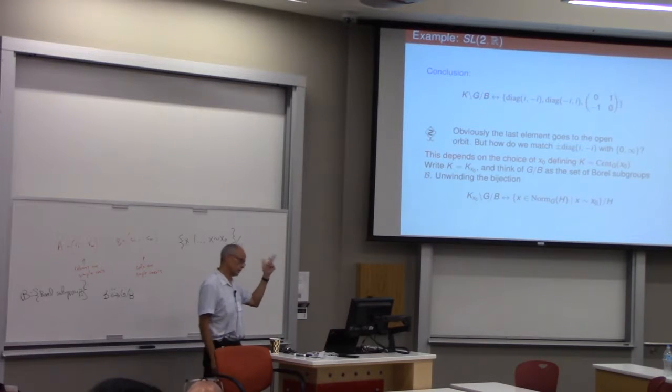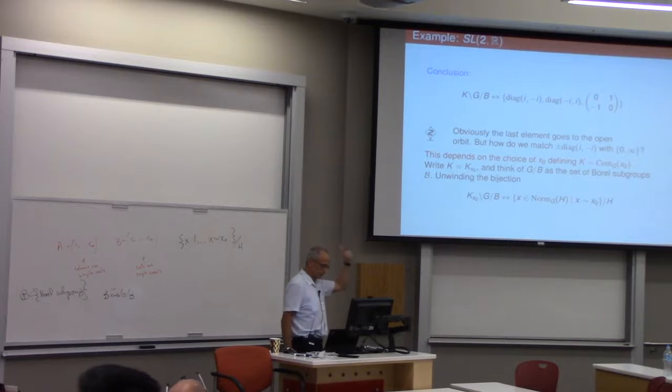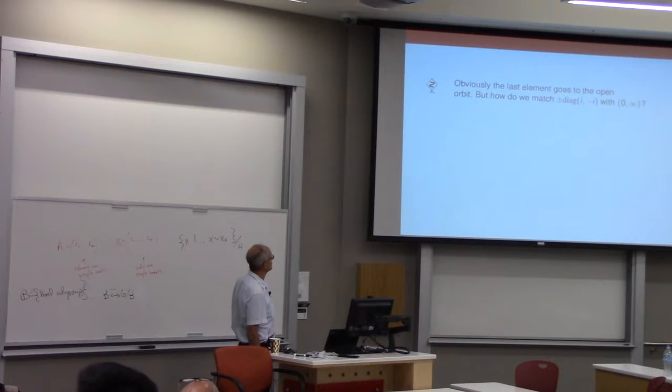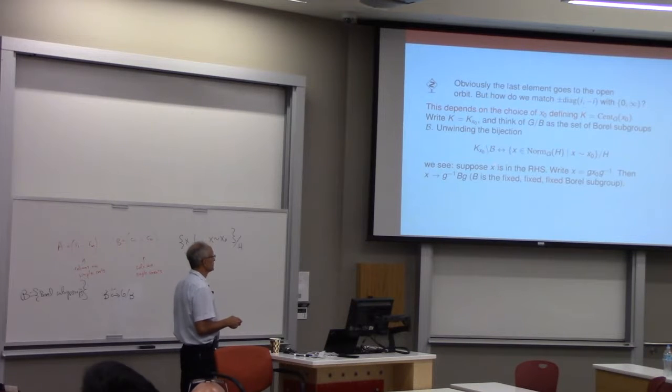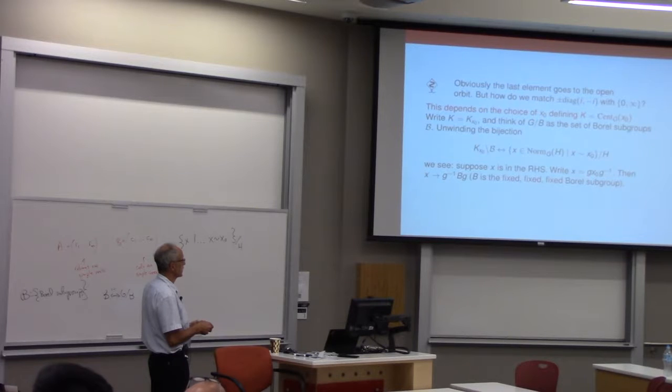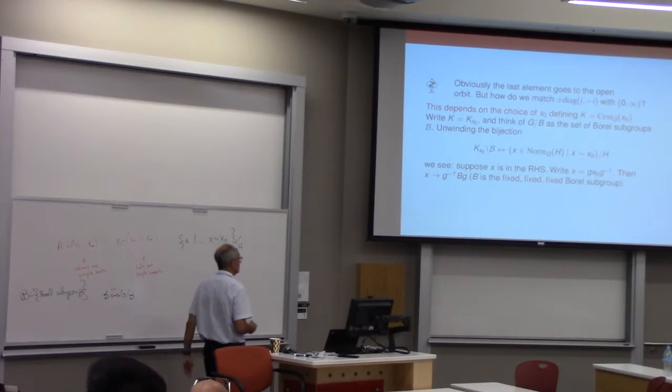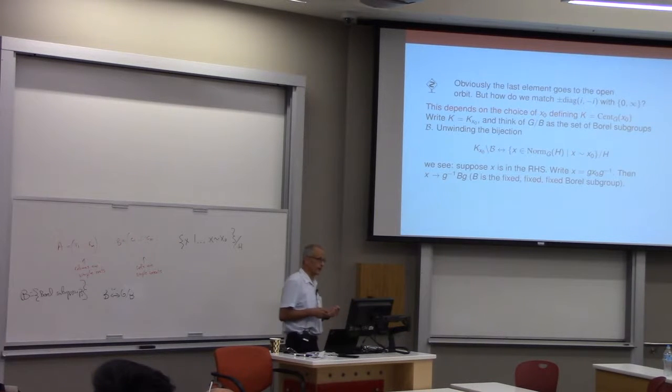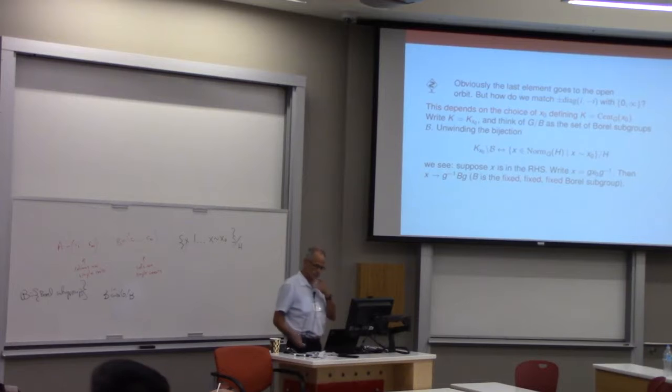So you really need to fix this X-naught, and you look at this bijection. I put the X-naught in here to emphasize that the left-hand side depends on X-naught. And once you fix X-naught, you have this bijection. If you go back to the algorithms paper which is referenced on the website, you can see where this comes from.